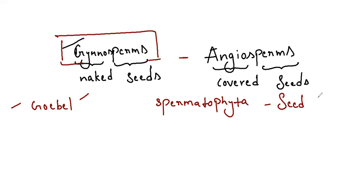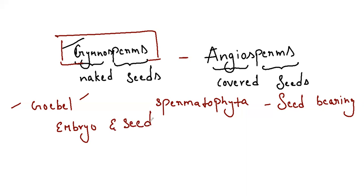Gymnosperms have naked seeds. There is no fruit formation in these plants. Only embryo and seed formation takes place. Gymnosperms are very limited in distribution — they are mainly seen in cold regions. You can see pine forests in Ooty, Kodaikanal, and similar areas. In India, gymnosperms are found in the Himalayan region. They are xerophytes, found on slope mountains and in cold regions.